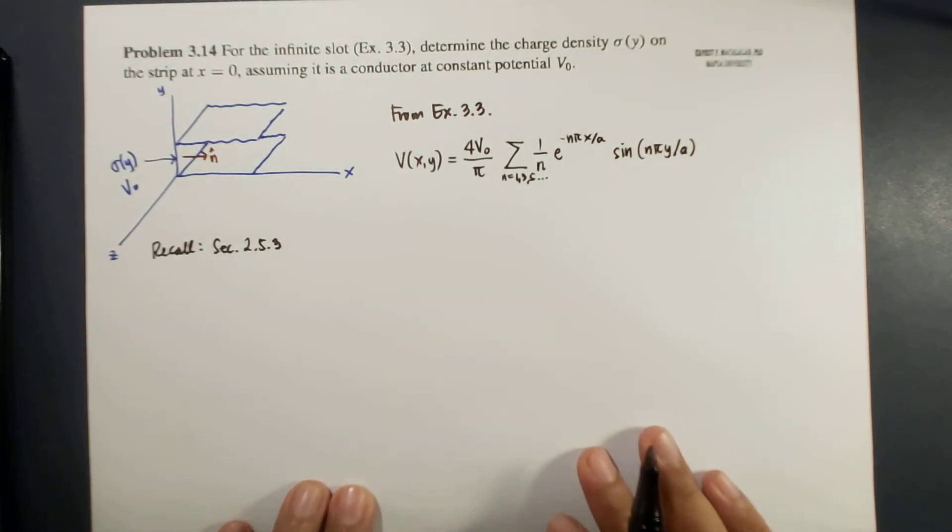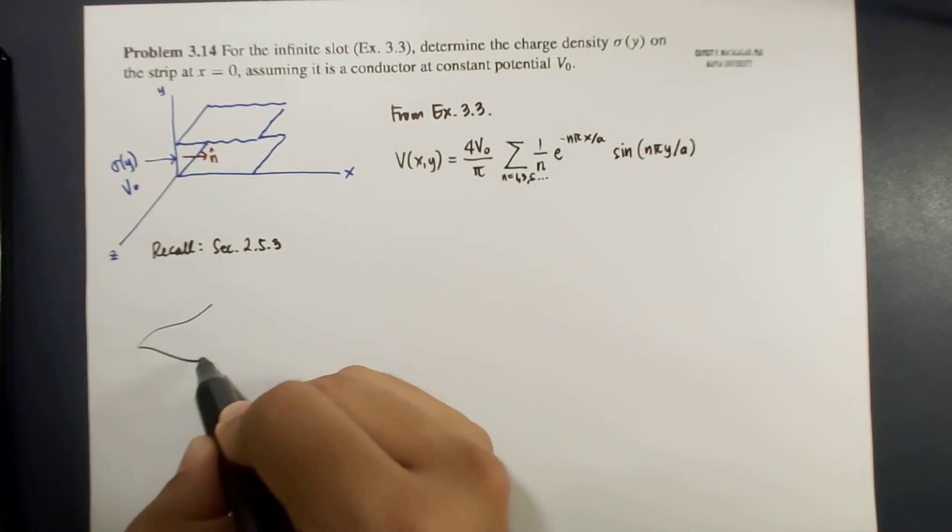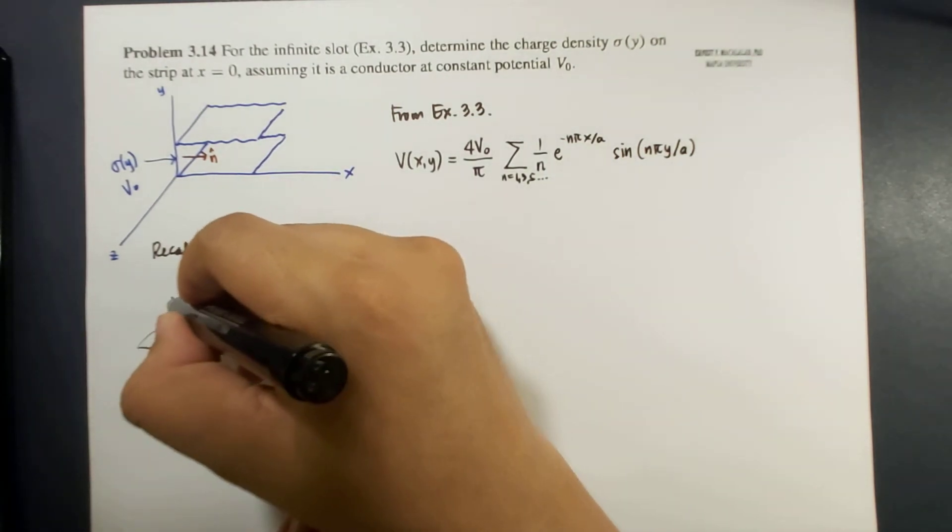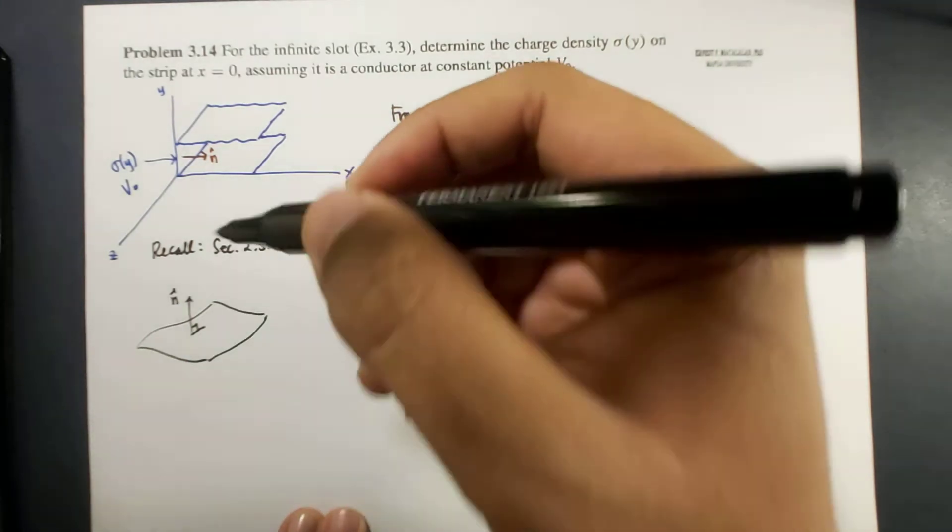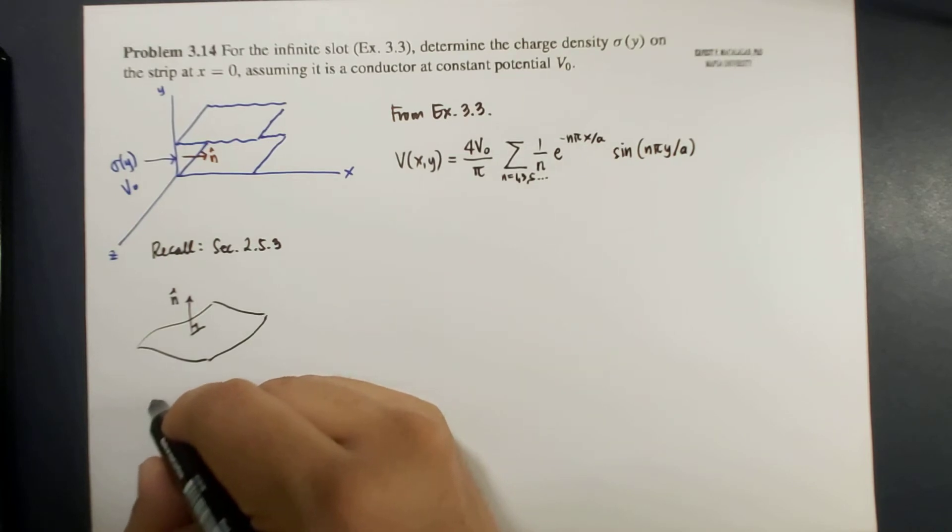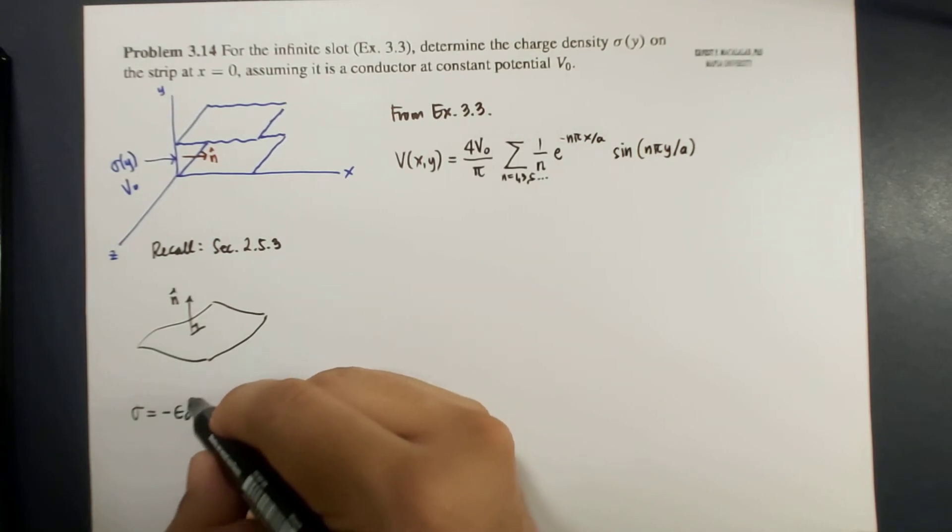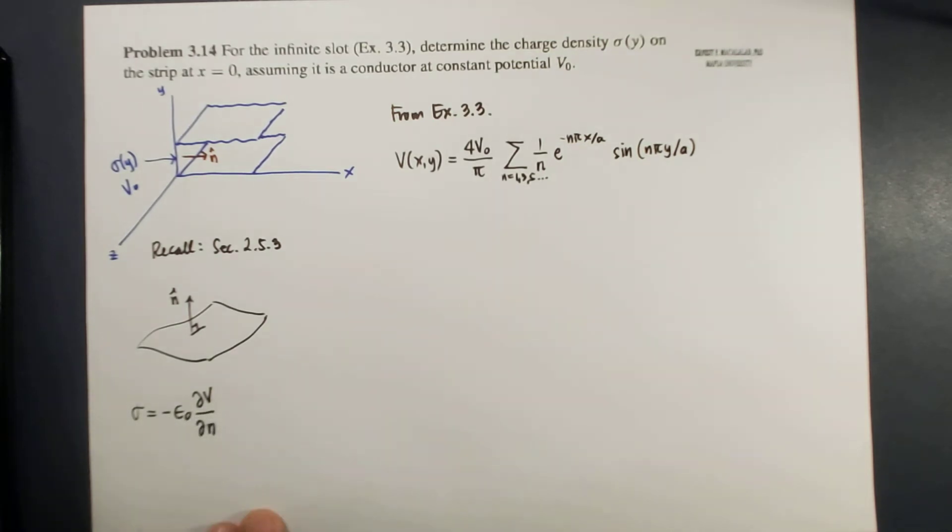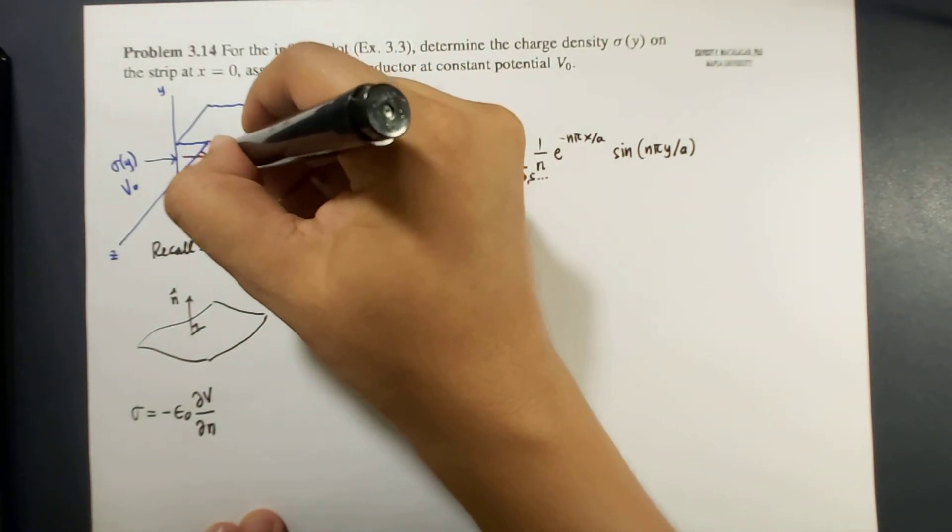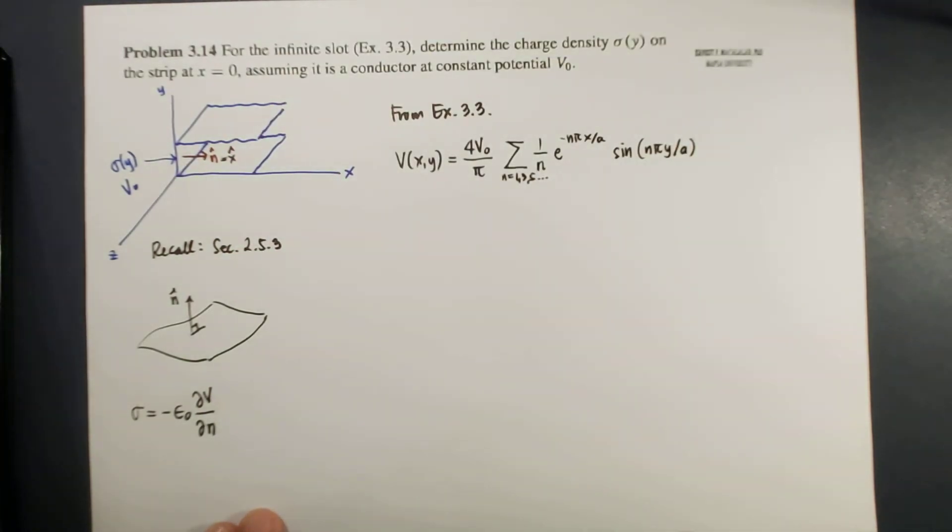So remember that if this is your surface, the normal unit vector is the unit vector perpendicular to your surface. And the charge density associated with this, is equal to negative epsilon naught times the partial derivative of the potential with respect to the normal direction. Okay, so in our case here, the normal direction is x hat.